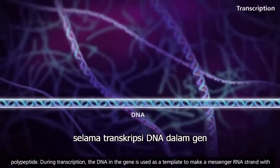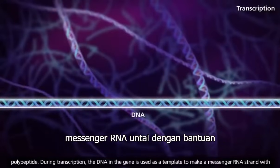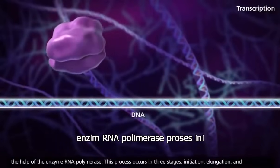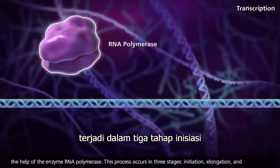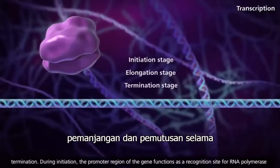During transcription, the DNA in the gene is used as a template to make a messenger RNA strand with the help of the enzyme RNA polymerase. This process occurs in three stages: initiation, elongation, and termination.